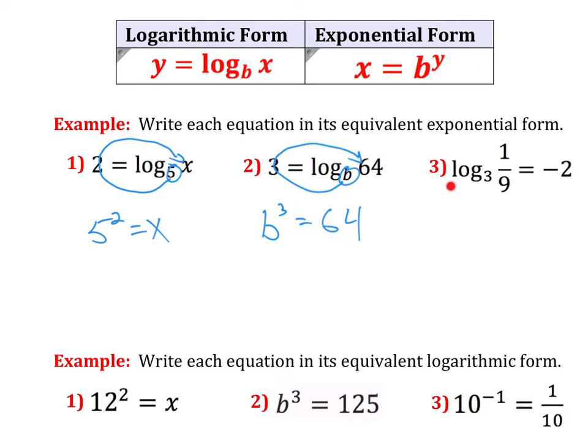Number 3. Log base 3 of 1 ninth equals negative 2. My base is 3. I'll loop around the equal sign. So 3, negative 2, 1 ninth. 3 to the power of negative 2 equals 1 ninth. Well, yeah, that's just a true equation right there.